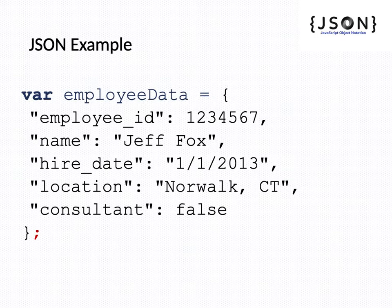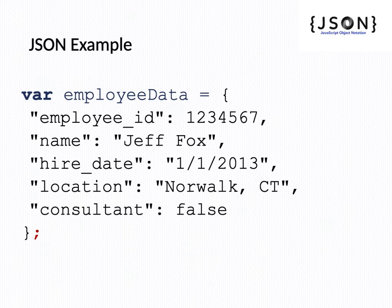The third name-value pair is hire_date colon 1/1/2013 — that is a date, which is also considered a string. Then location: Norwalk, city, and consultant: false. Closing the curly bracket completes the EmployeeData object, which has five name-value pairs separated by commas.